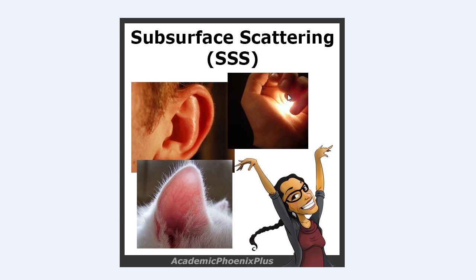We've all seen this when we put a flashlight in our hands and you can see how pink and red your fingers can turn. And finally, ears — cats' ears are great examples. They're very thin and you can see the veins, and they have a tendency to look very translucent.